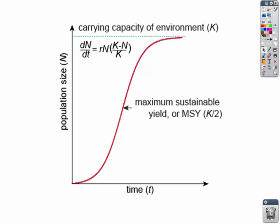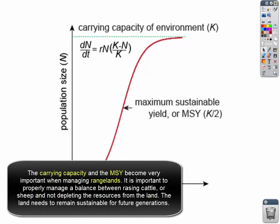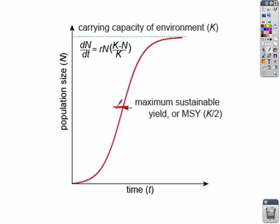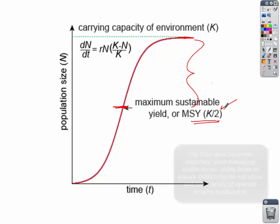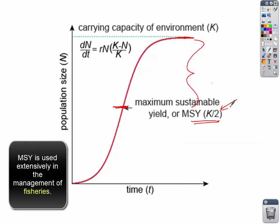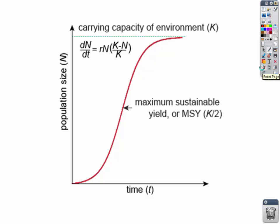Another concept to keep in mind is maximum sustainable yield. In order to keep a population safe from destruction or being depleted, we use this concept: the maximum amount of a species you can take away without hurting its population. Based on a mathematical formula, it comes out to about half of the carrying capacity — so the maximum sustainable yield equals carrying capacity divided by 2. We'll be working with this in class, so take a note now.